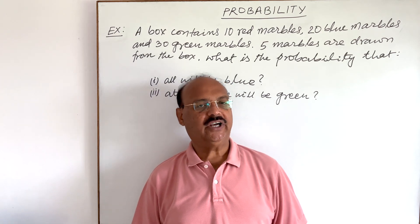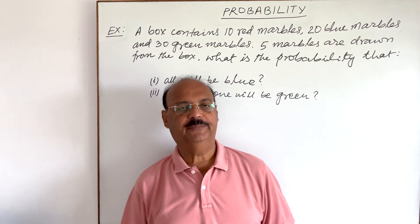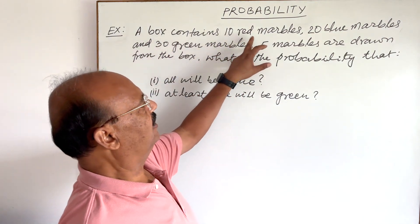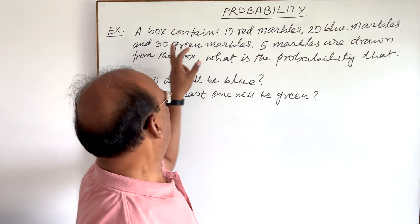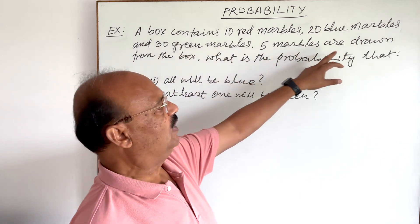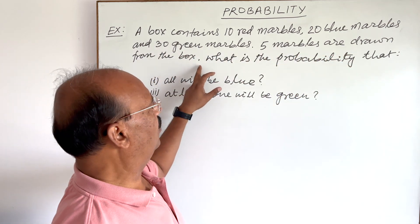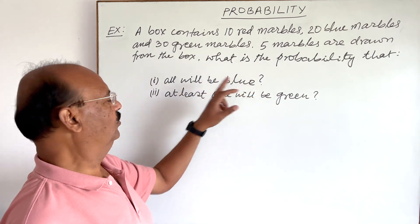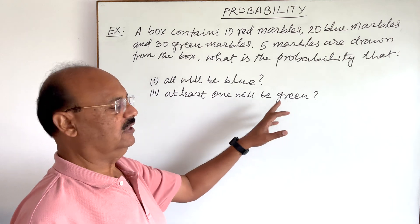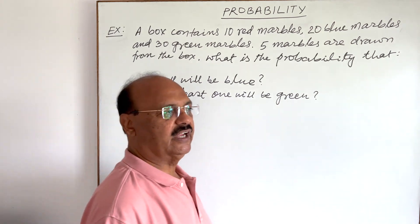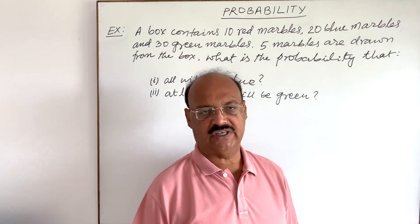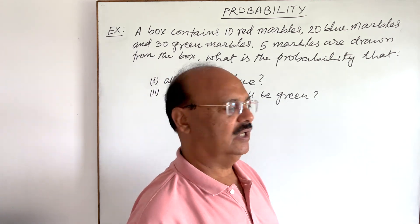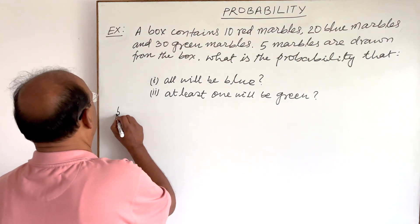Welcome students. Let us see a very important question from the topic of probability. A box contains 10 red marbles, 20 blue marbles, and 30 green marbles. Five marbles are drawn from the box. What is the probability that: first, all will be blue, and second, at least one will be green? This question has been taken from the NCERT book of standard 11 — a little tricky but very interesting and simple.